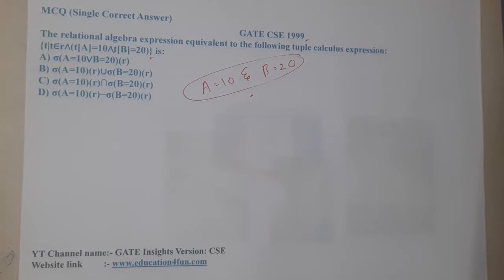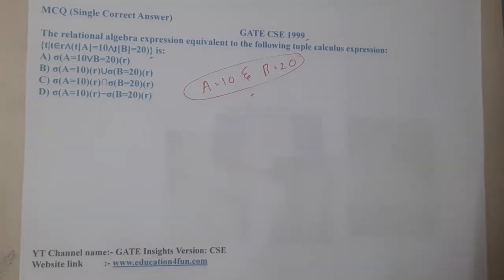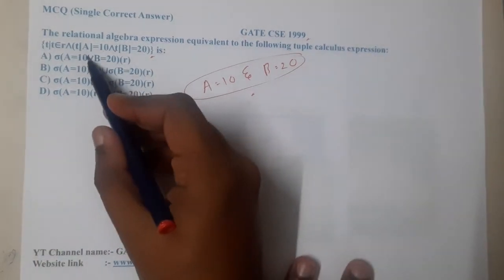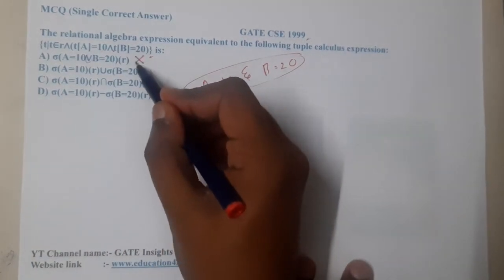If you recall, we are working with these conditions mainly. Now if you check option A, everything is good but here we are having a minus operation, so that's wrong. Similarly, we can directly eliminate option B and D.